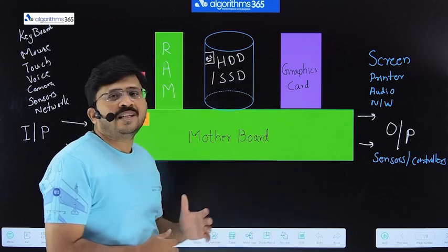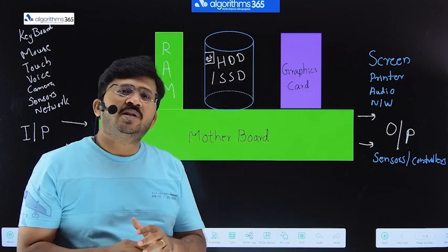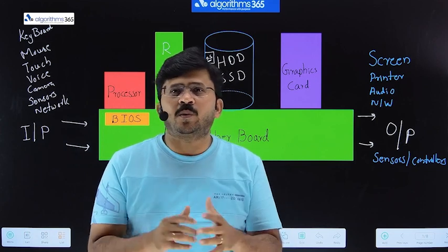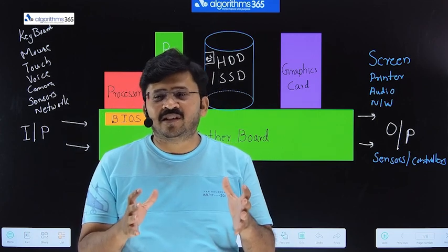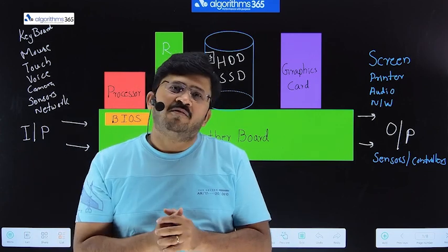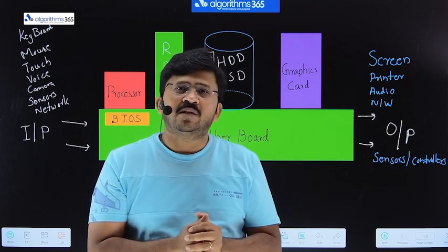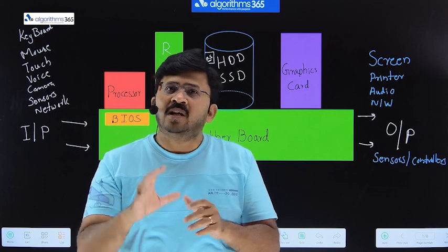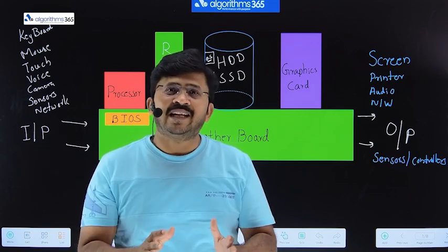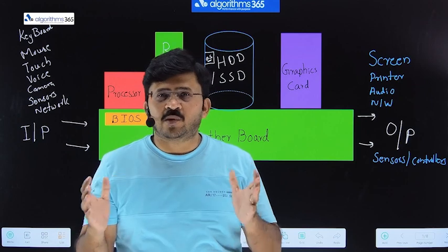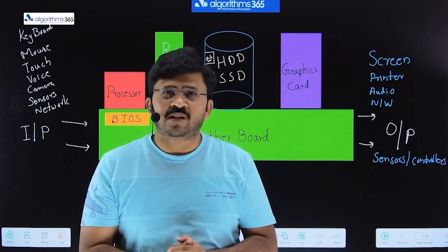When the computers were designed, the early day computers were designed in a very specific way where each of the computer did only a particular task. For example, a computer to make certain mathematical calculations or a computer to drive a certain equipment. Finally, as the things evolved, there was an introduction of general purpose computers.